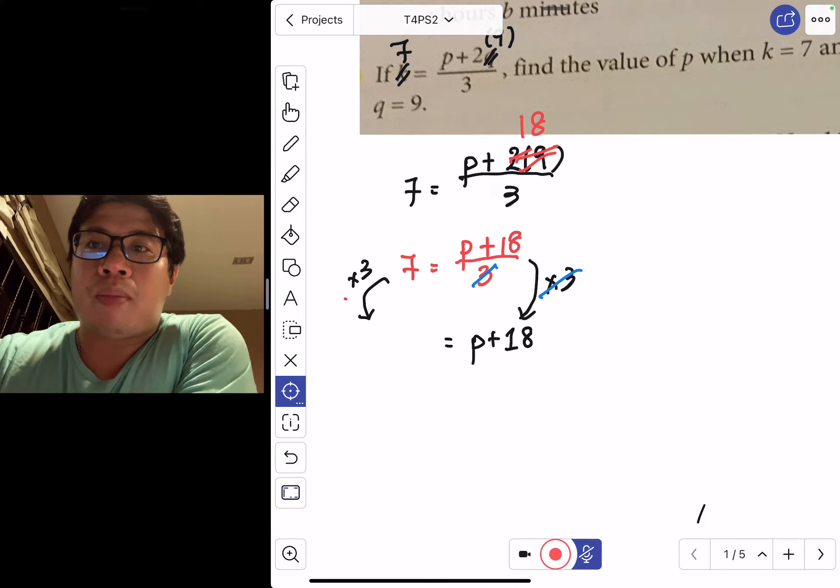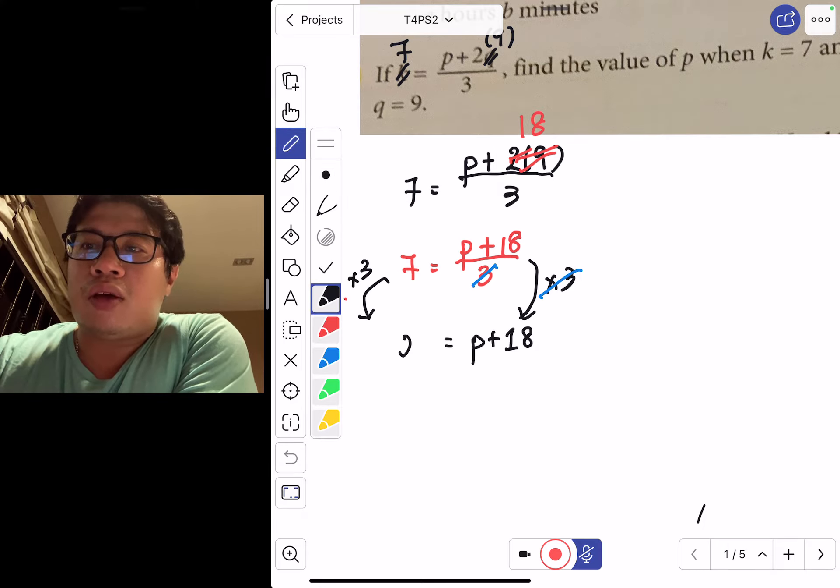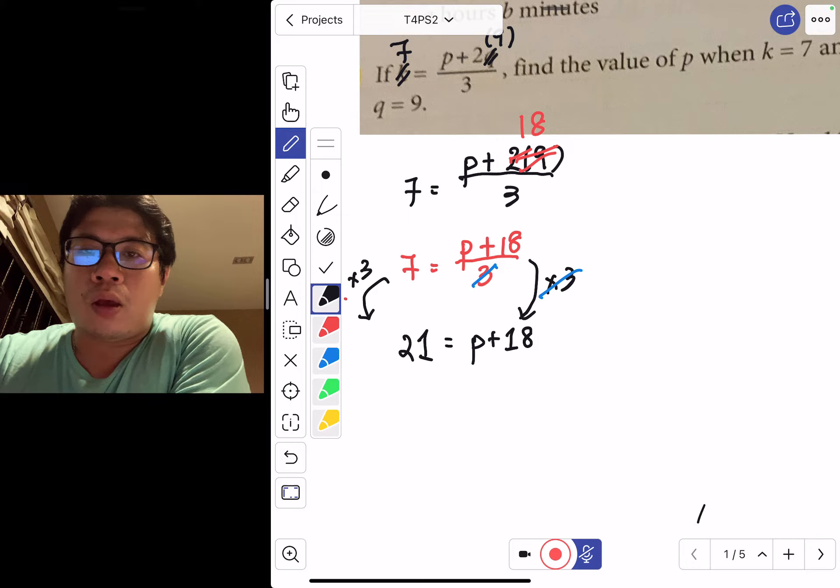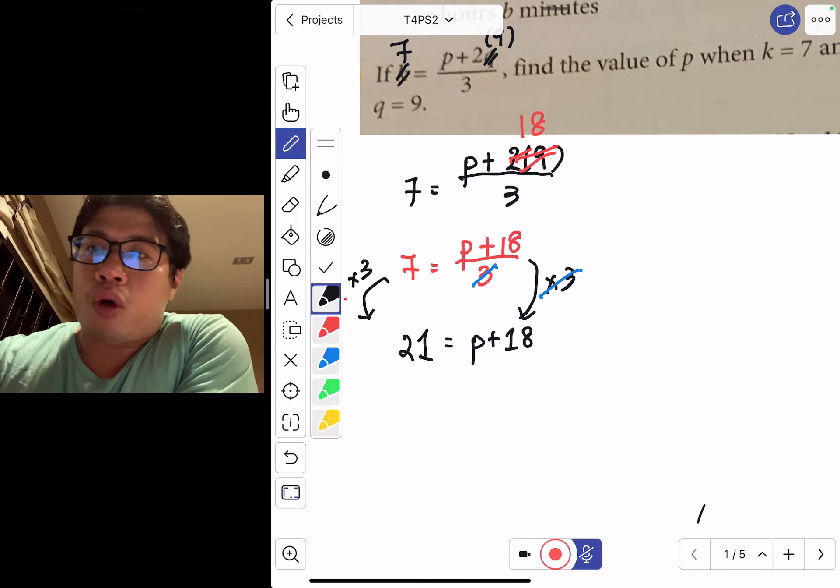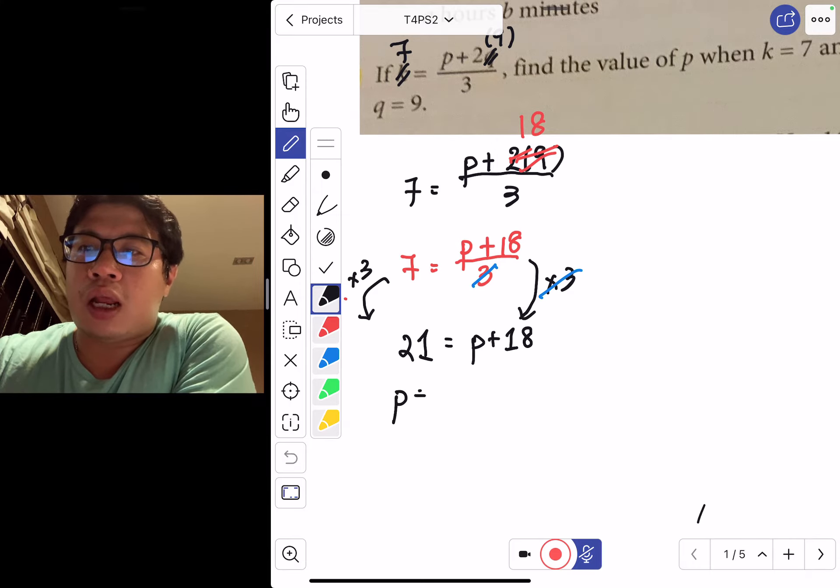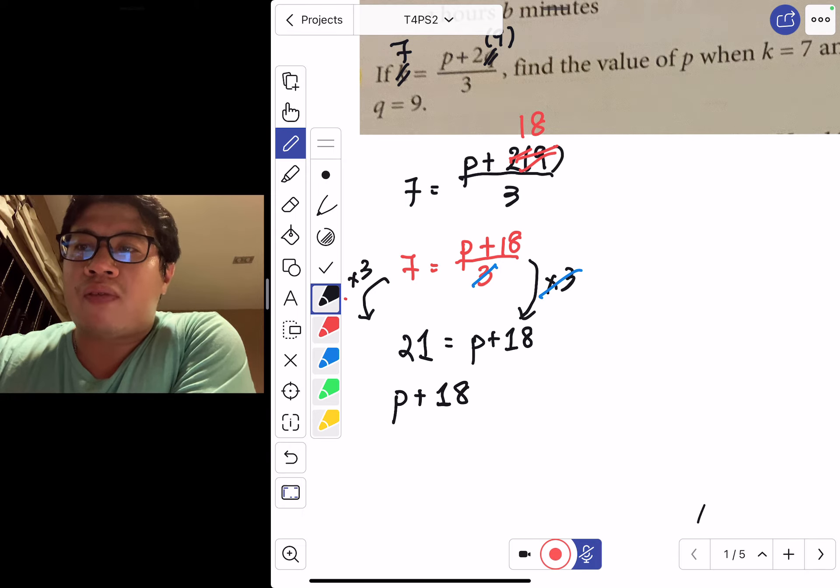I'm just going to swap my terms around so that you see that I have my variable on my left hand side. A equals b is the same as b equals a, so I swap my terms: p plus 18 equals 21.